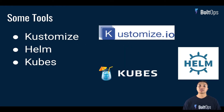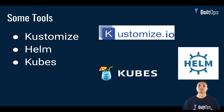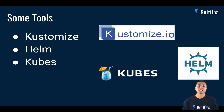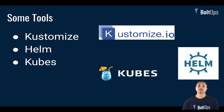So what happens is people end up reaching for tools. They start looking for tools in the space, or maybe they want to write their own wrapper script. But even wrapper scripts — the requirements aren't that complicated, it's just a little difficult to manage all these YAML files with these requirements. Here are some of the tools I'll be covering briefly in this video: Kustomize, Helm, and Kubes.